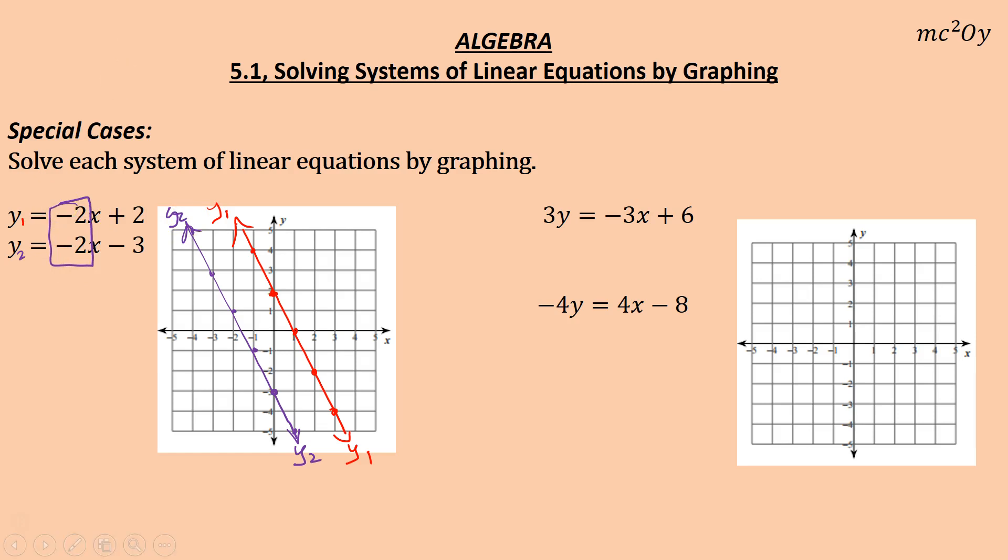Parallel lines, meaning the same slope. So, if you can identify that before you graph it, here in my class, I'm fine with you. Just saying, hey, it's no solution because they have the same slope. They will never intersect. That's an abbreviation for solution. So, no solution. If you say no sol, that's good for me.